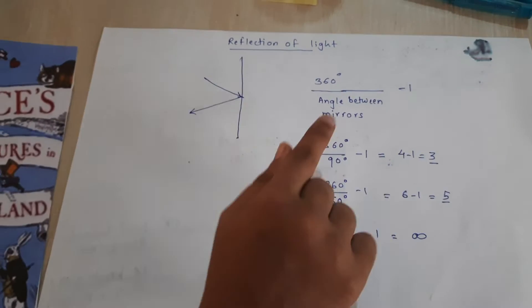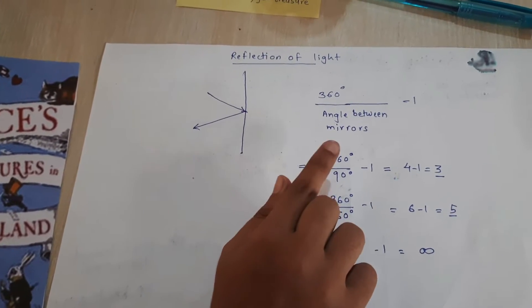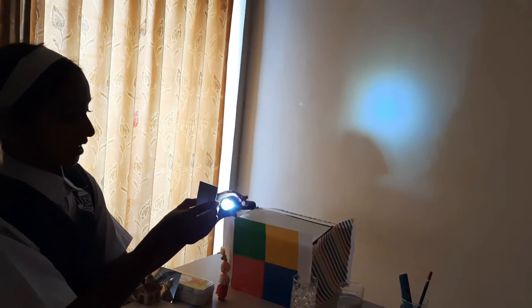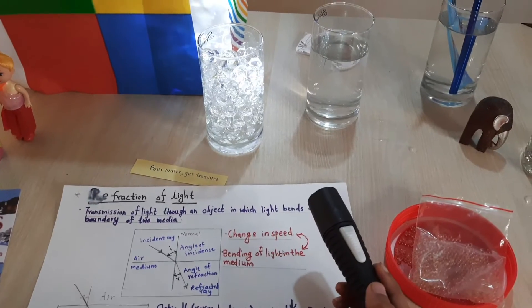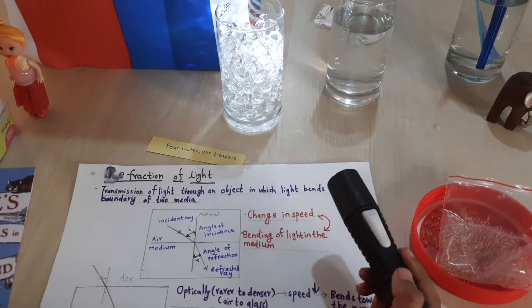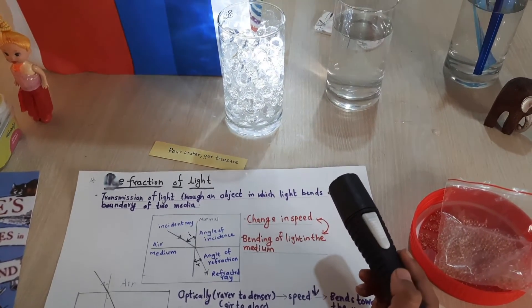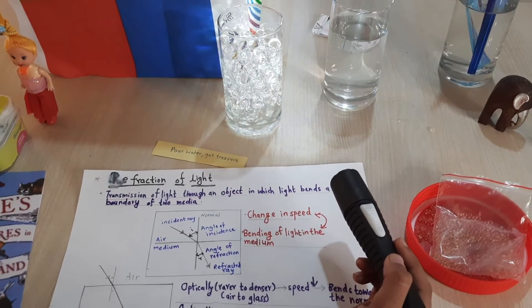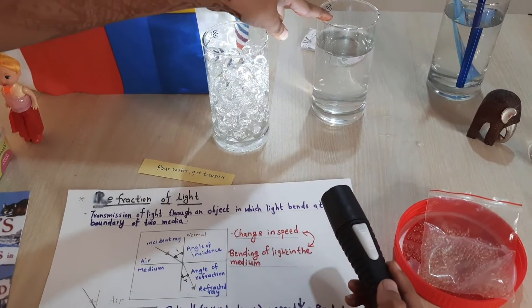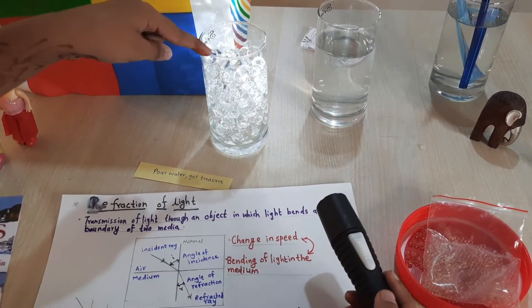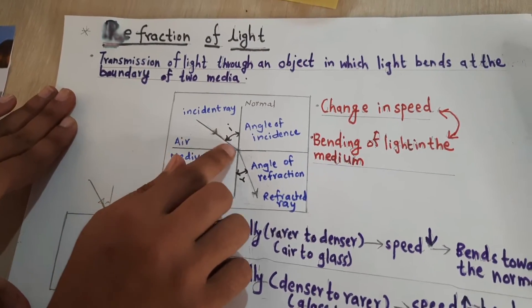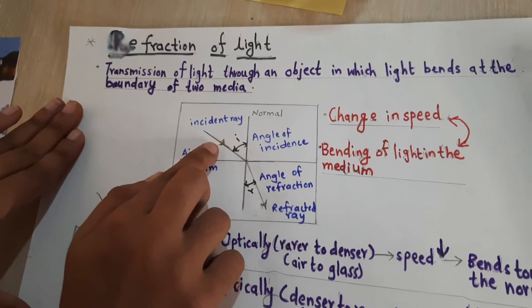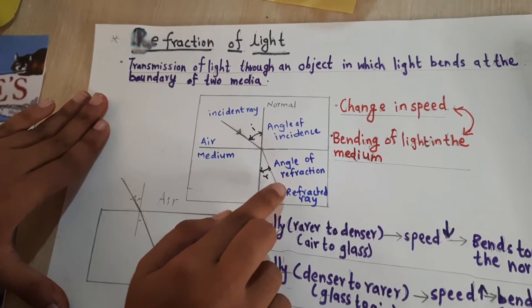The number of images changes with the angle between the mirrors. Here, I have taken a mirror and a battery. As the light strikes on the mirror, the reflection on the wall is happening. When the light travels from one medium into another medium, the light changes its speed and bends. Air is one medium, glass is another medium, water and water beads are other mediums.